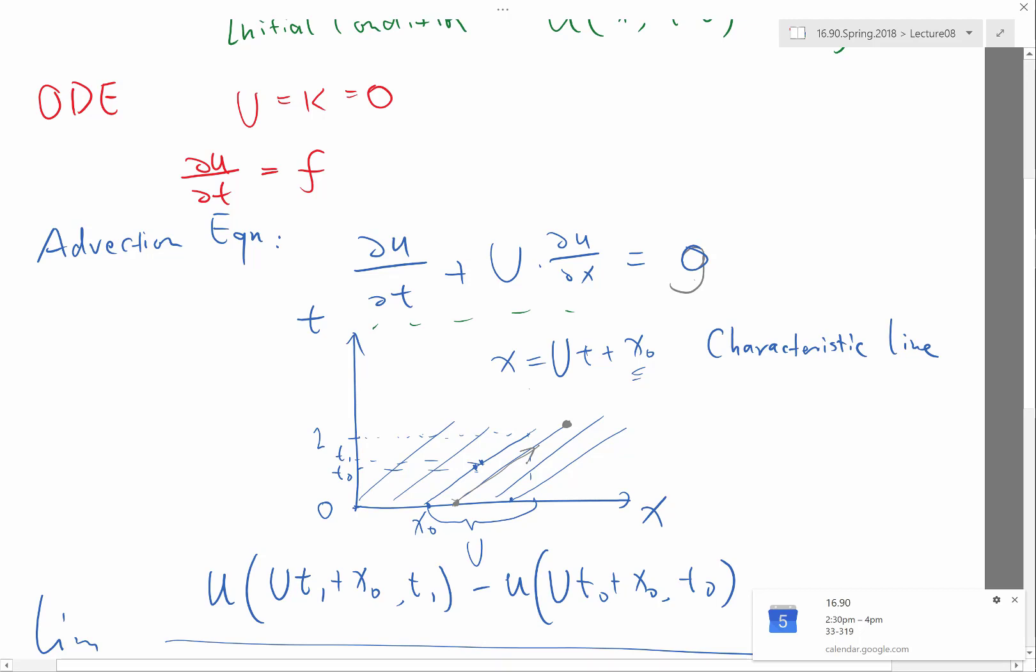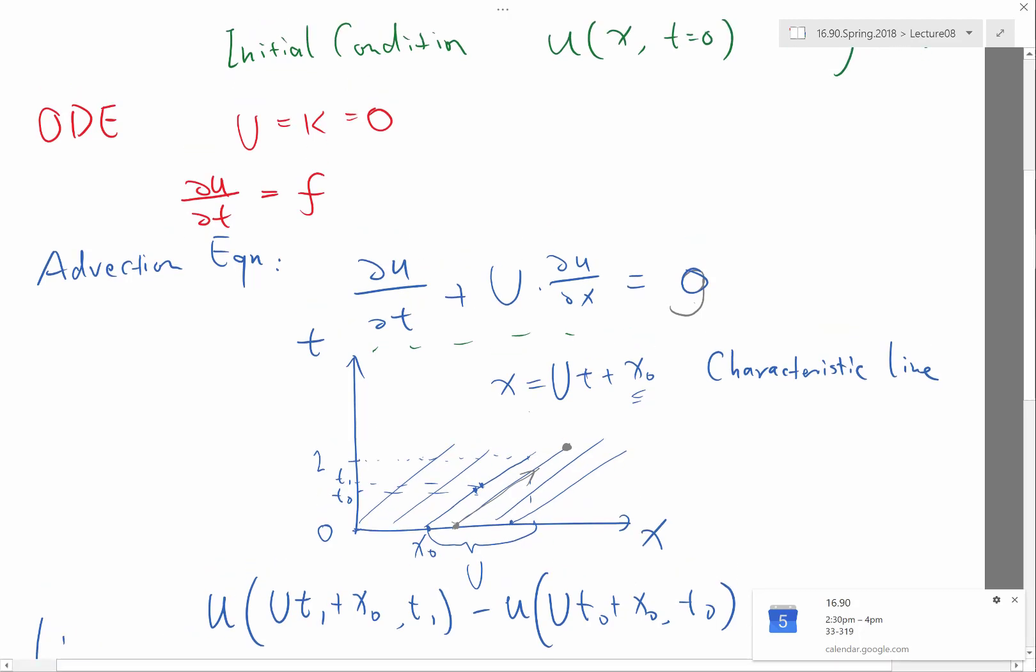So when would it not be? When would it be not straight lines? The only, the when would be if this big u is not a constant. All right. So that happens if u is an explicit function of time or when u is a function of the small u. Right. So in both cases, the solution would change and u is not going to be a constant. Okay. Getting there. Getting there.